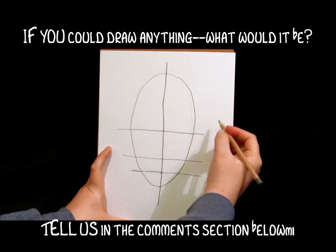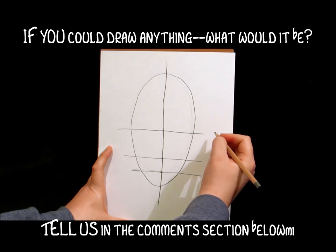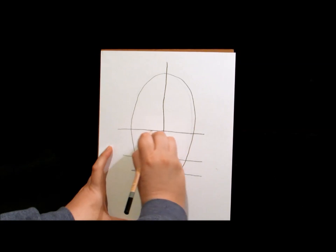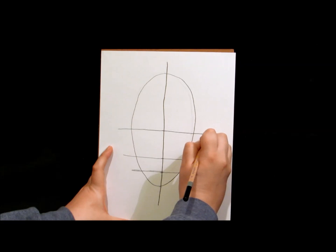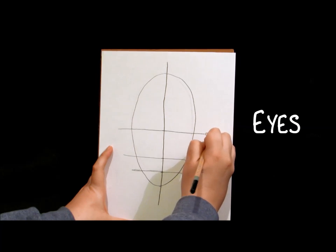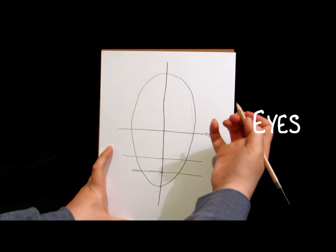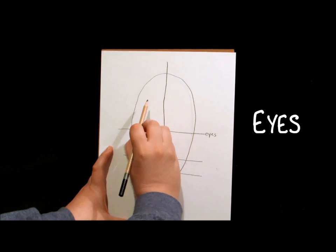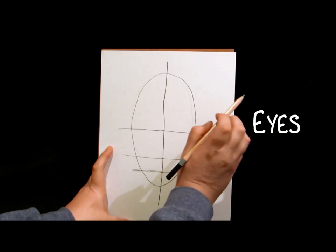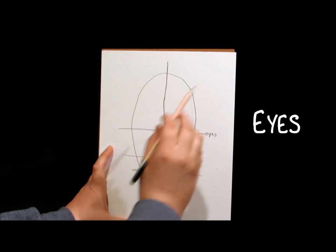Now I'm going to label these so that you know what the lines are for. The midpoint here is actually the eyes. Now this surprises a lot of people who have never learned about the dimensions or drawn faces because usually people draw eyes up here. That's actually more where the hairline goes.